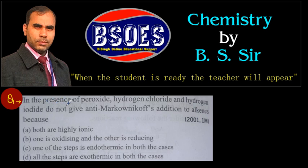In the presence of peroxide, hydrogen chloride and hydrogen iodide do not give anti-Markovnikov addition to alkenes. The options given are: both are highly ionic, one is oxidizing and other is reducing, one of the steps is endothermic in both cases, and all steps are exothermic in both cases. Let's understand why - in the presence of peroxide, anti-Markovnikov addition occurs via a free radical mechanism.